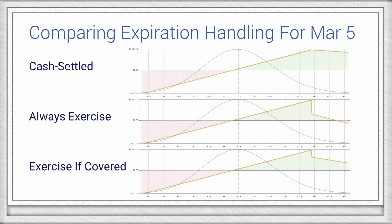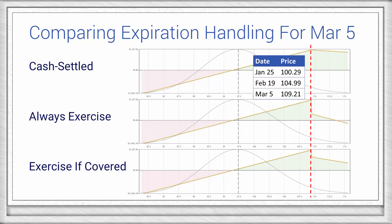This example also brings to light one of the key considerations when working with the different price path modeling strategies. You'll notice that there's a pivot point right around 109.21. This is because we're using the linear progression price modeling here, and the highest terminal price it reaches that involves options expiring worthless is at 109.21. Above that price, the options would be exercised in one of the strategies, resulting in a short underlying position.